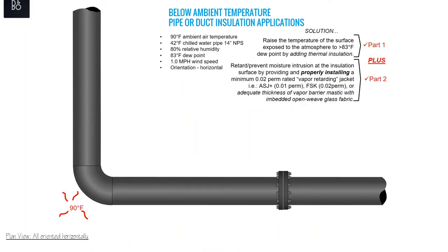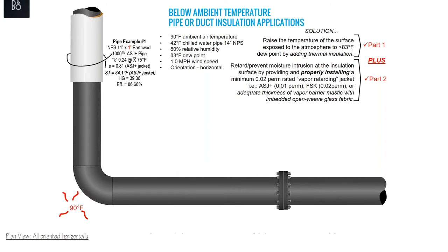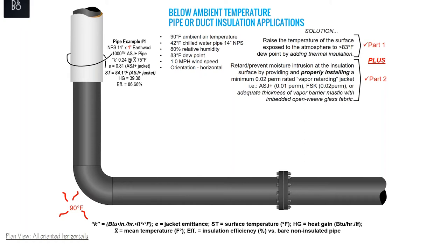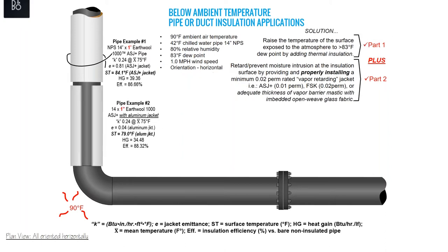Now let's look at our pipe under the same design conditions. You've got to have that vapor barrier. Our EarthWool 1000 pipe insulation with all-service jacket — one-inch will work, but don't ever specify one inch for chilled water. Someone asking for one inch for chilled water is going to have a problem. Looking at 14-inch by one-inch with a vapor barrier and ASJ plus aluminum jacket — there's a radical surface temperature change. We went from 84.1°F to 79°F — that's going to sweat all day long. Aluminum jacket is not your friend here.